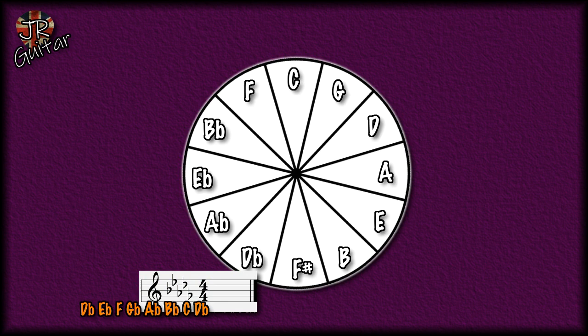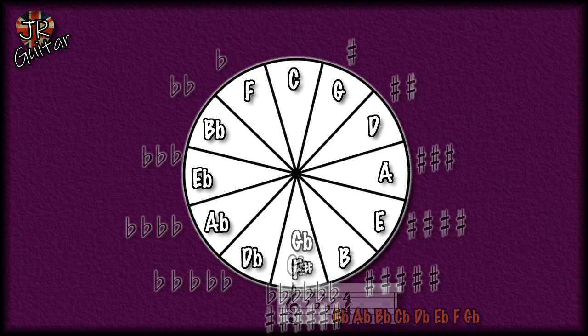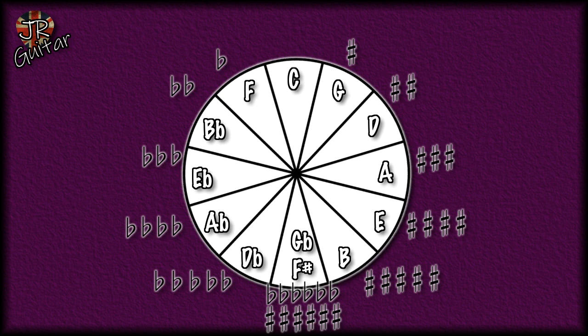Going one step further, we reach what we previously called F sharp — here it is as the key of G flat — with six flats: G flat, A flat, B flat, C flat, D flat and E flat. That C flat is just another name for B; we call it C flat because you don't use the same letter twice, and you've already got B flat. So going clockwise tells you how many sharps are in a key signature; going anti-clockwise tells you how many flats.